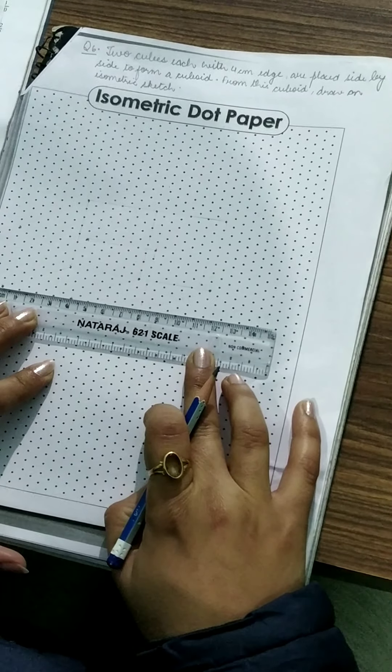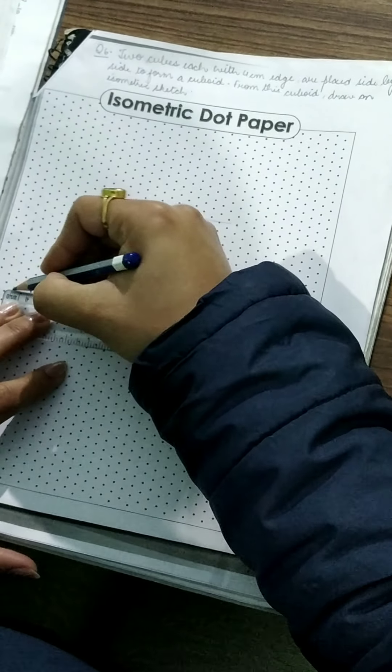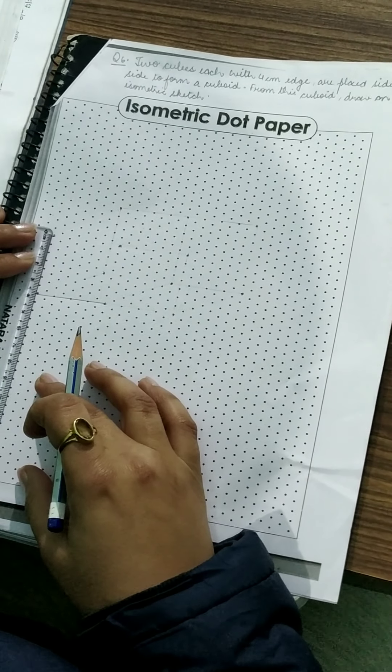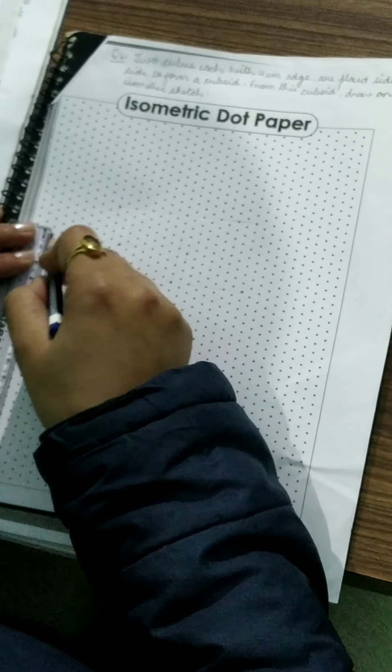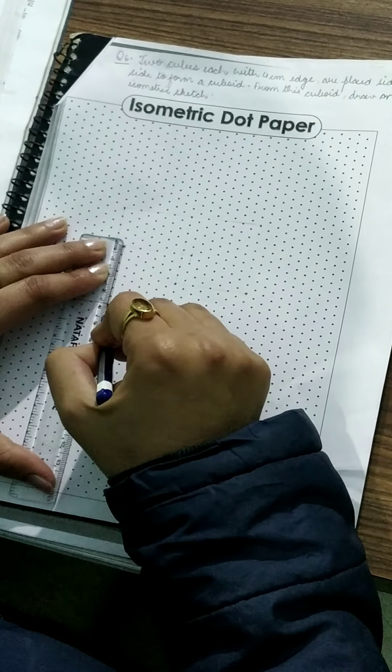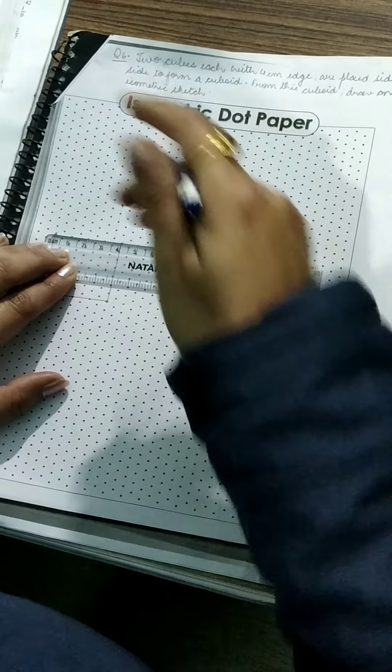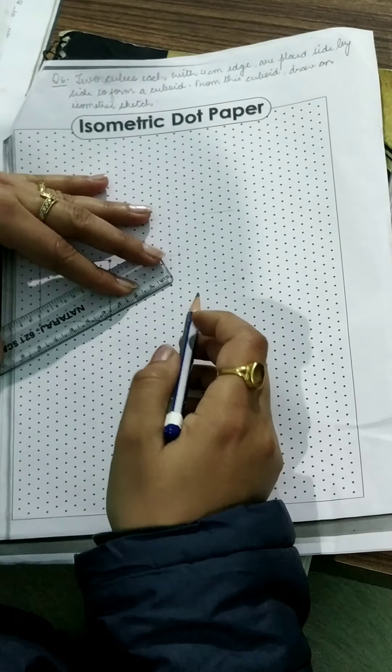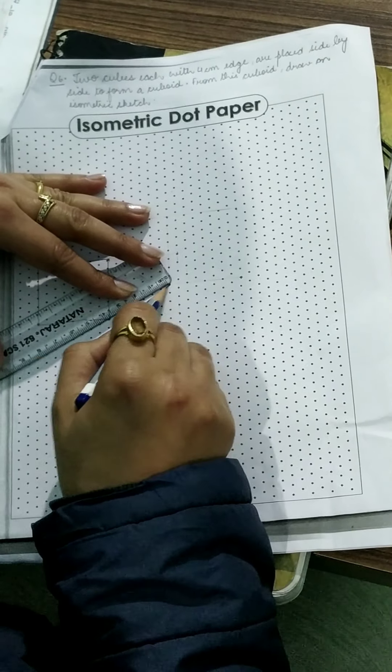First of all draw a 4 cm line over here like this, 4 cm line. Draw another line and make a square of 4 cm side each. Like this I have made a square of side 4 cm. Now diagonally also draw 4 cm line.